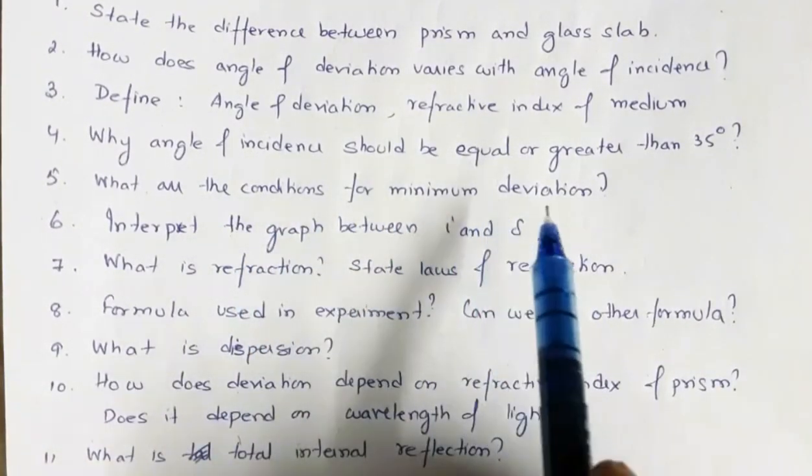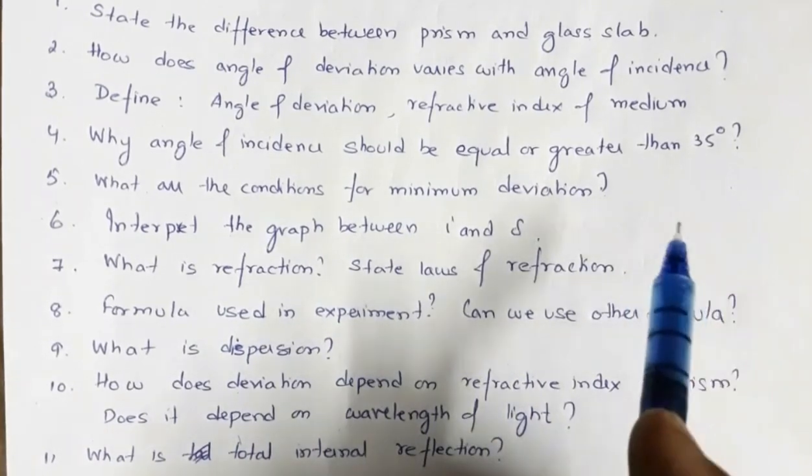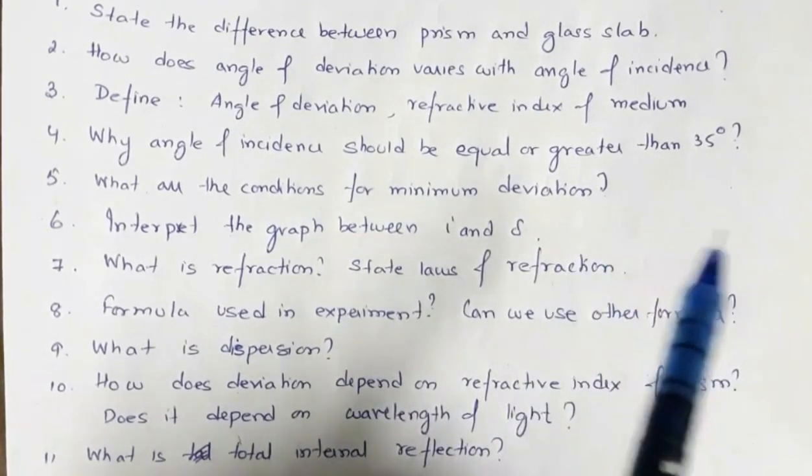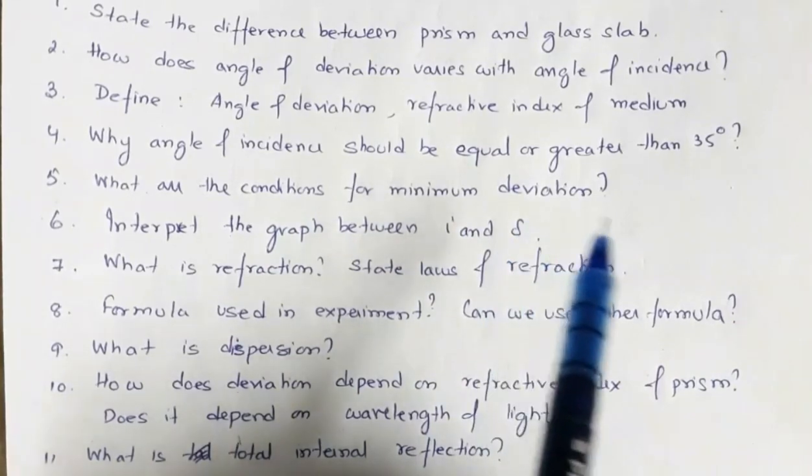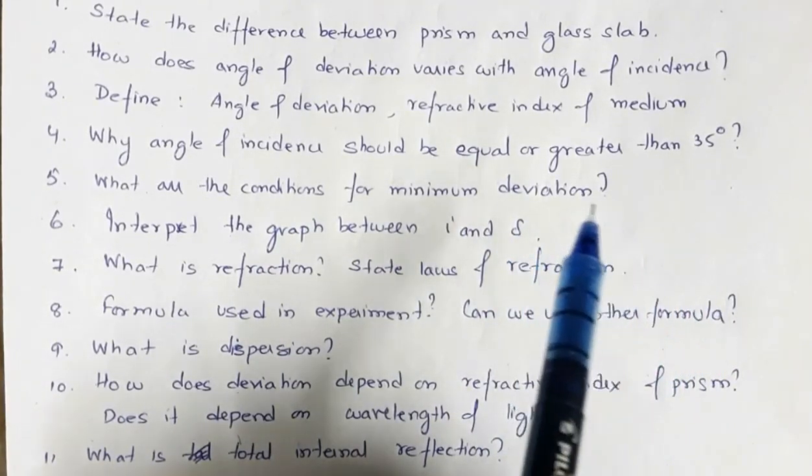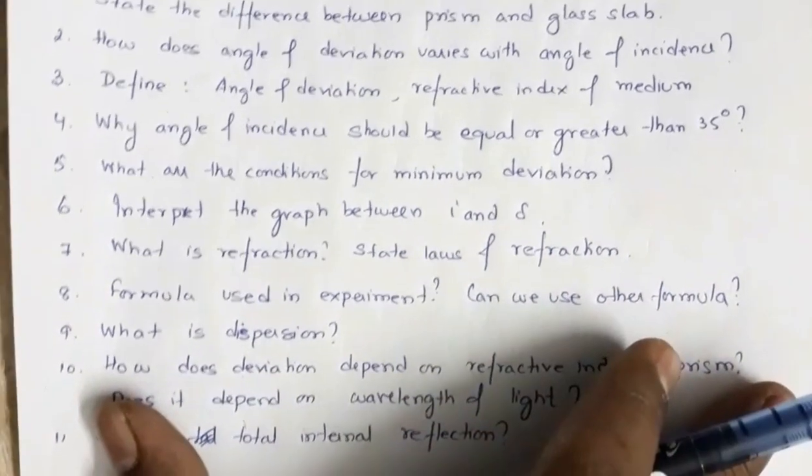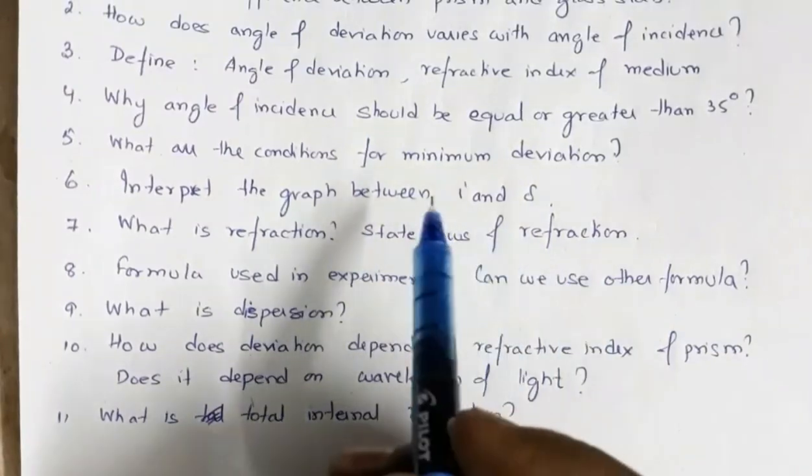What are the conditions for minimum deviation? At minimum deviation, angle of incidence and angle of emergence are equal, angle of refraction at the first surface and angle of incidence at the second surface are equal and the refracted ray in the prism is parallel to base of the prism. These are the few conditions for minimum deviation.